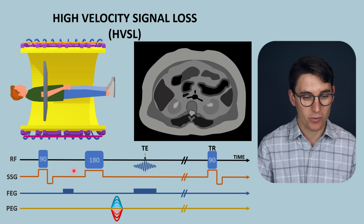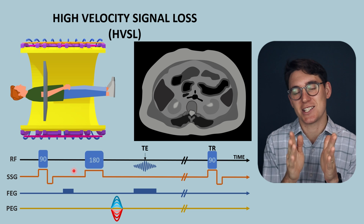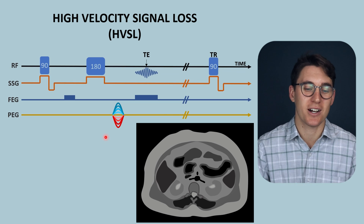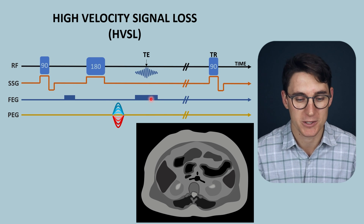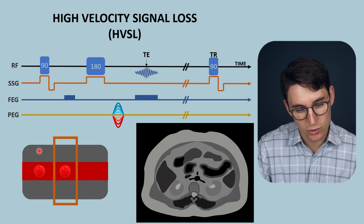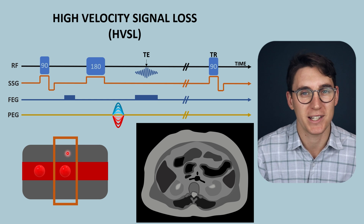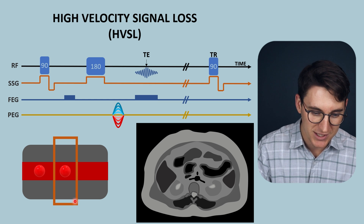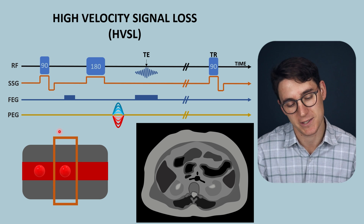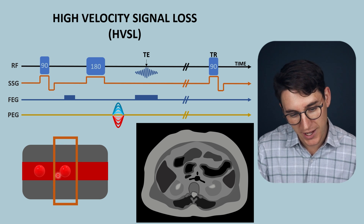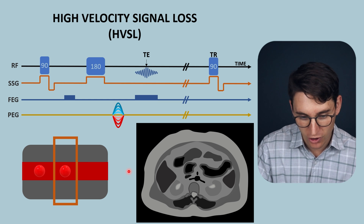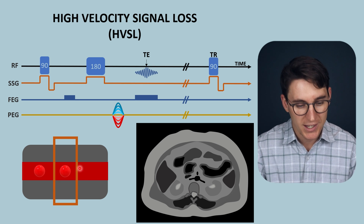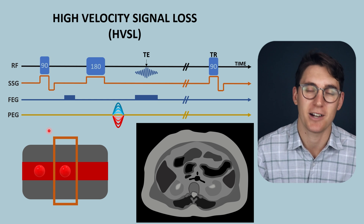We've assumed up until now that the tissue within that slice is remaining stationary, but that's not the case with blood vessels. Let's look at what happens when blood moves into and out of a slice during a spin echo pulse sequence. Taking a diagrammatic representation of our patient: the gray areas represent tissue that is remaining stationary, the red area represents blood flowing into and out of the slice, and the orange region represents the slice. The blood is traveling in the aorta — our patient is lying, this is the longitudinal plane — and blood is flowing in this diagram from left to right. Let's look at what happens to the blood within the slice when we start applying our pulse sequence.